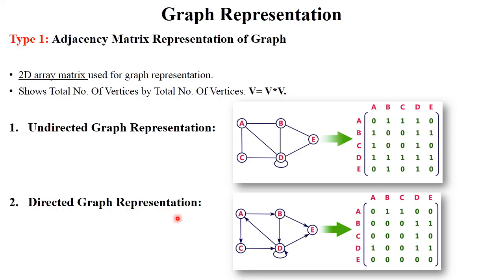For directed graph representation, the given graph shows specific directions. Directed graph representation focuses only on outgoing edges. A to A is 0 since no edge is present. A to B is 1 since it is an outgoing edge. A to C is 1. A to D is 0 because there is only an incoming edge to A from D, not an outgoing one. D to D is a self-loop, so that becomes 1. This is graph representation in matrix format.